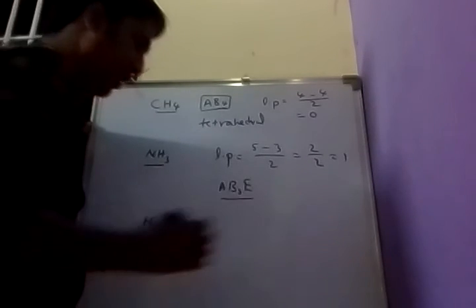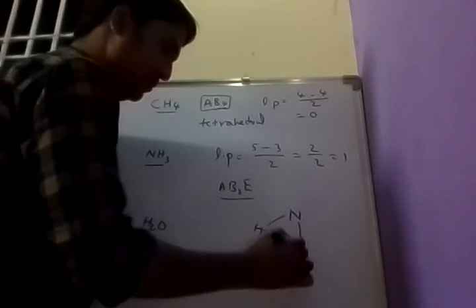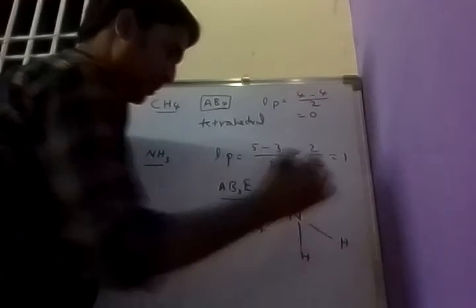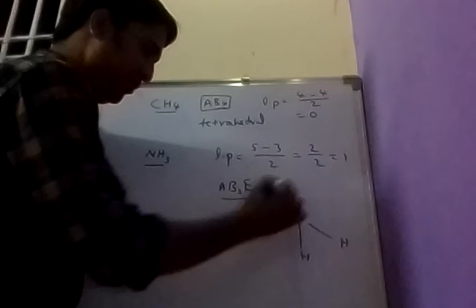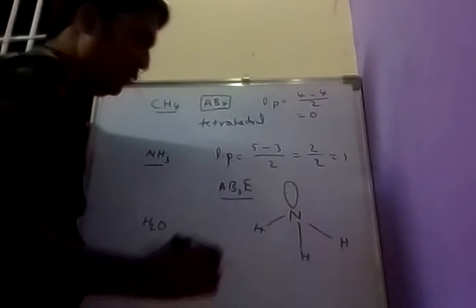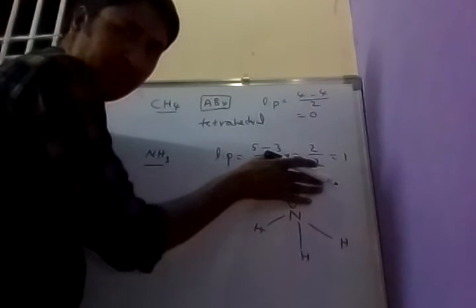AB3E type molecules have pyramidal shape. Total electron pairs: 4, with 3 bond pairs and 1 lone pair. One position is occupied by lone pair, not used for shape, so tetrahedral shape changes to pyramidal shape.